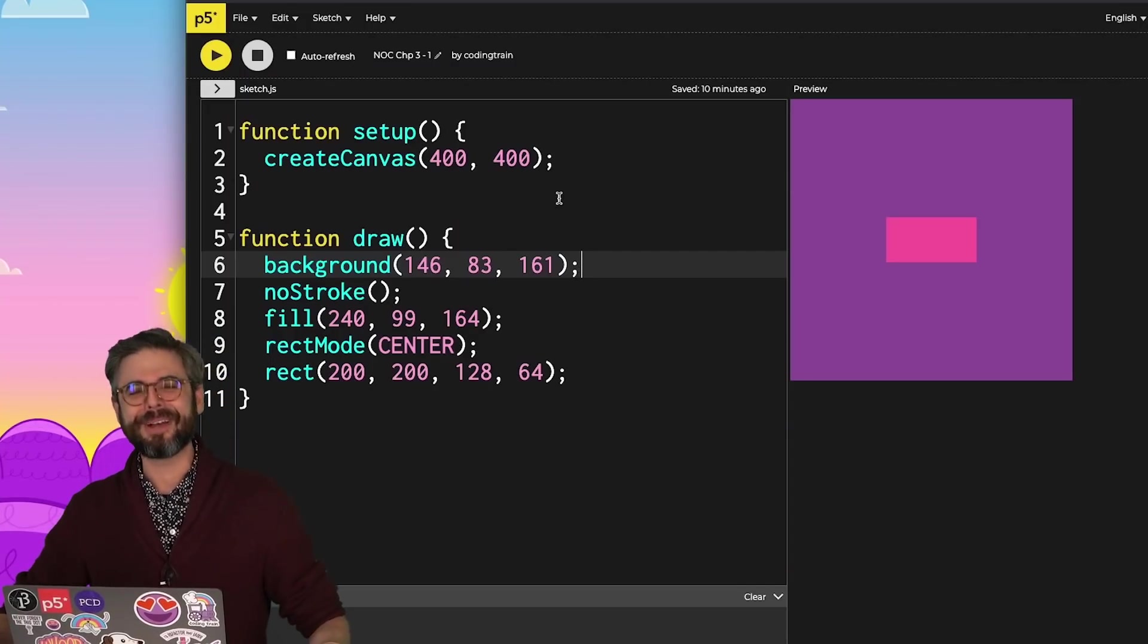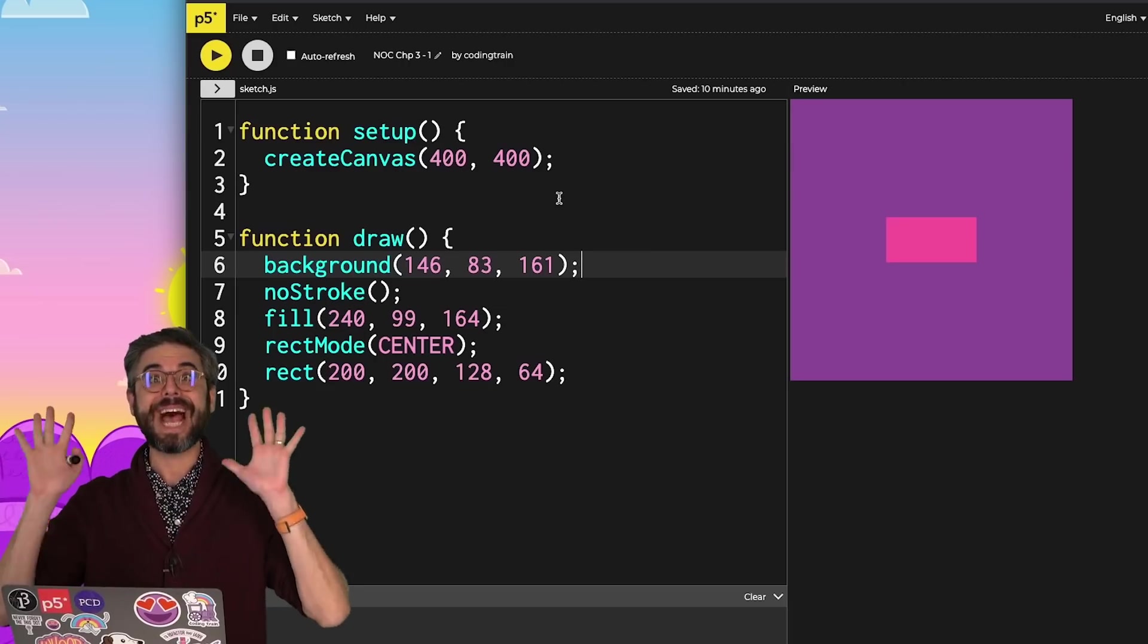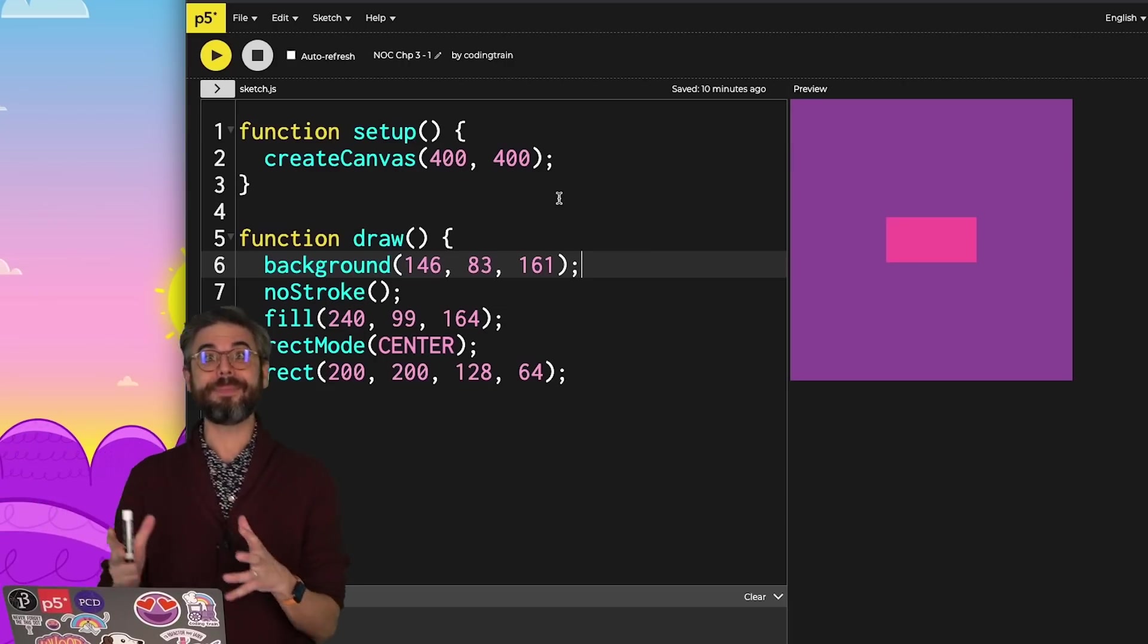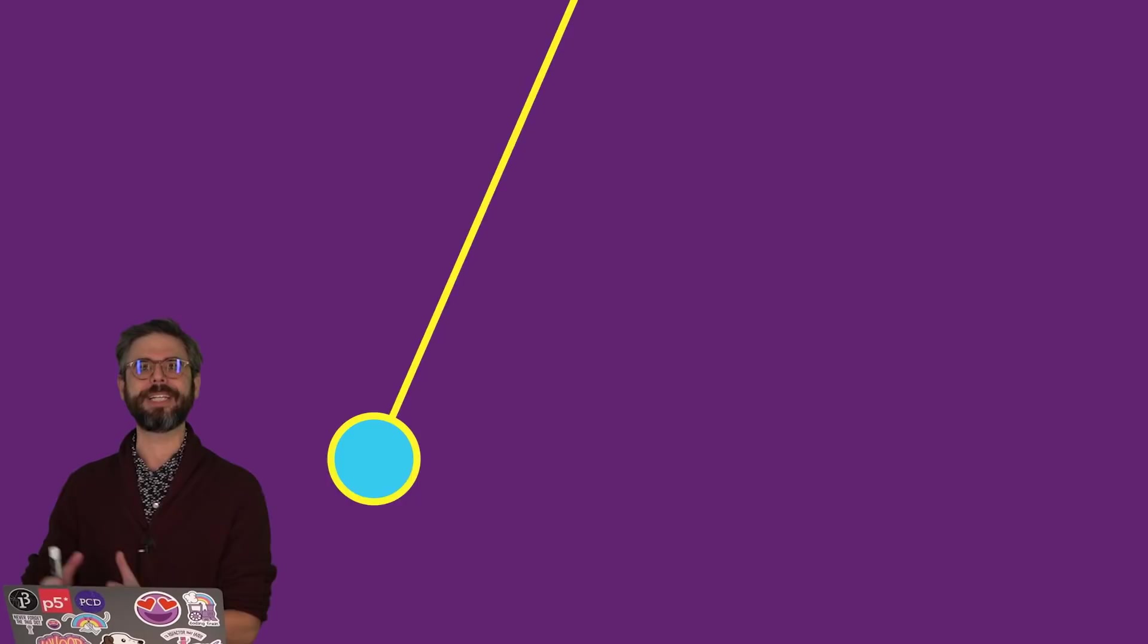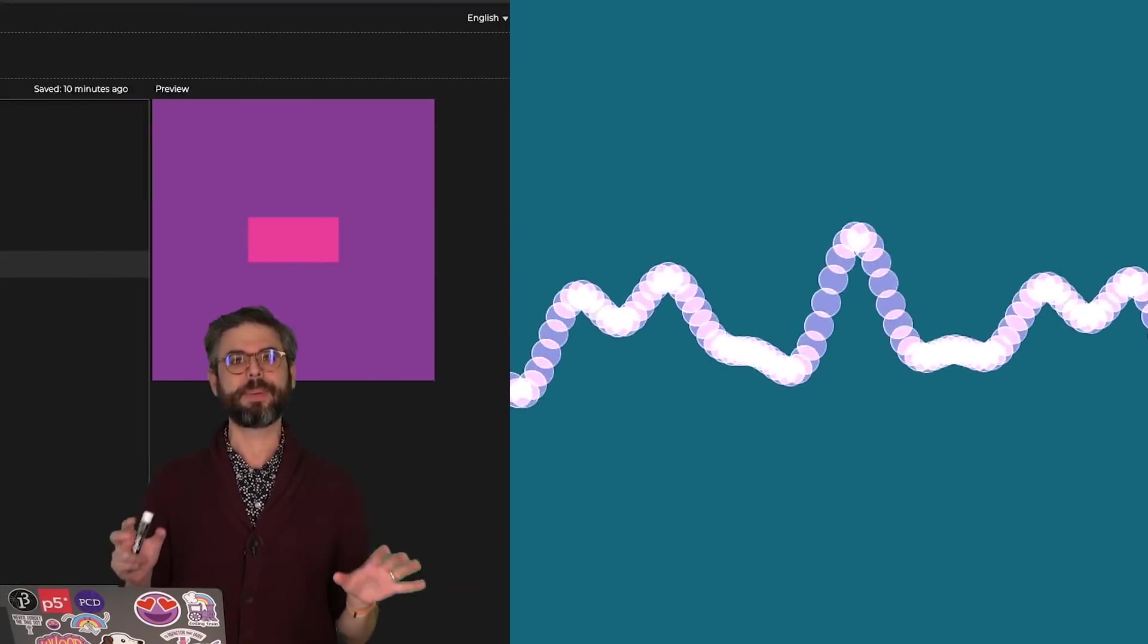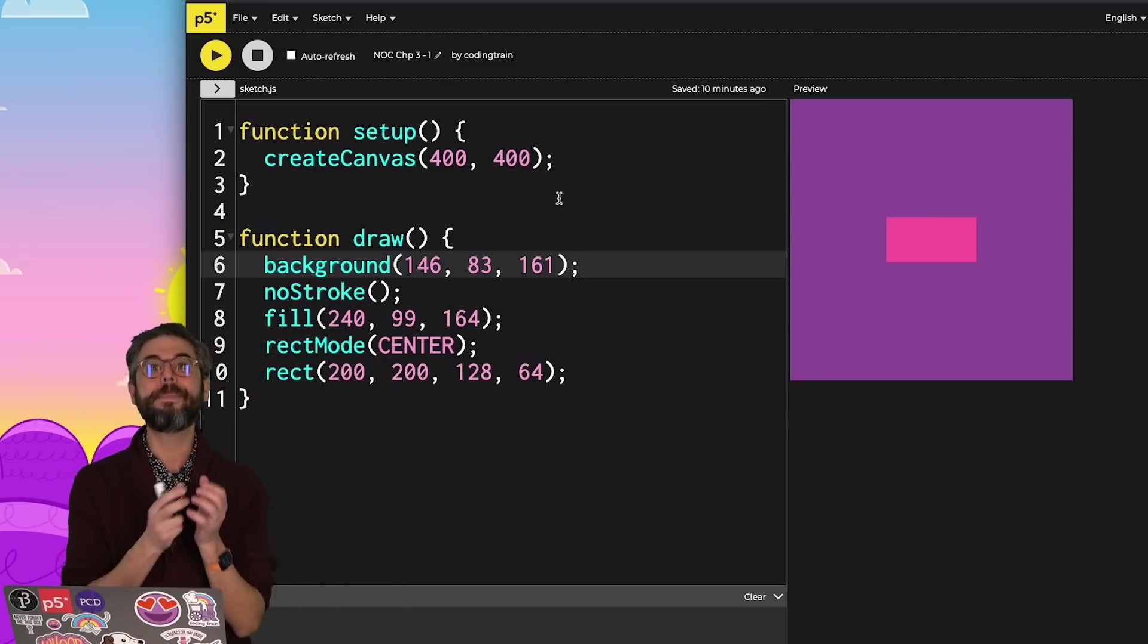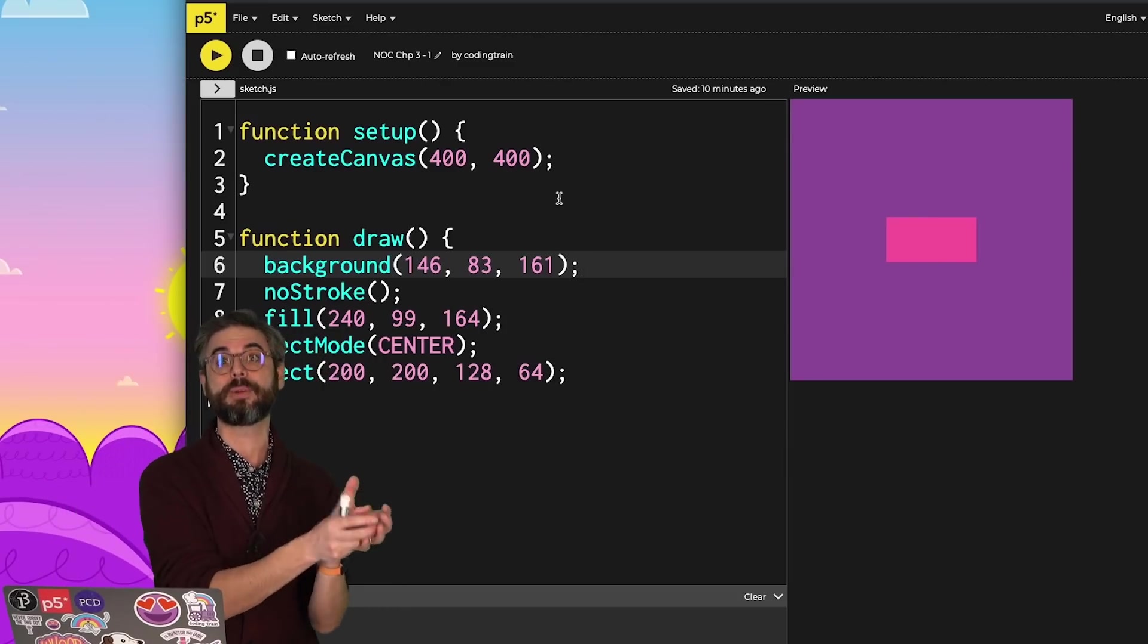Hello, and welcome to Chapter 3 of the Nature of Code. The title of this chapter is Oscillating Motion, and that's where I want to get to. What does it mean to model a swinging pendulum? The plucking of a guitar string? Wave forms? How do we model and visualize all of those in code in P5.js? But before I can get to those examples, I need to build up the building blocks of the tools and knowledge that we'll need to make those.